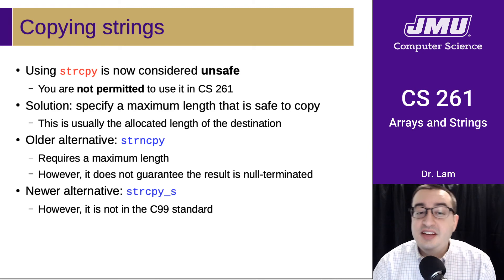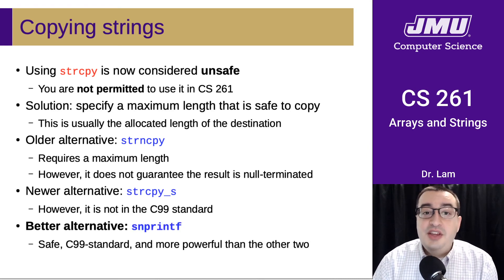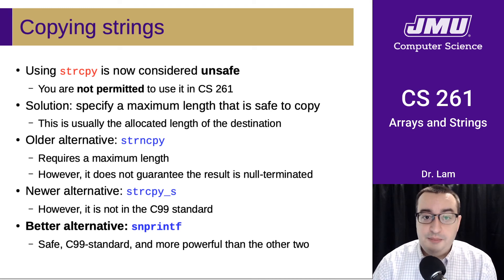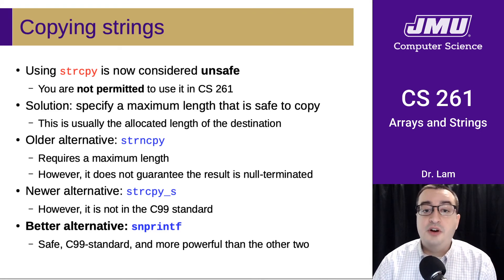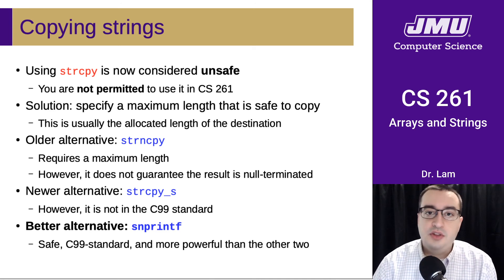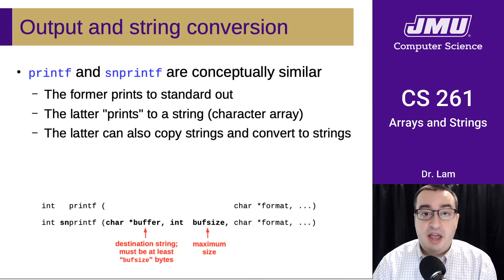There is also a newer alternative called strncpys, which is considered safer and is null-terminated. However, it's not in the C99 standard, which is what we're using in this course. So the better alternative that we're going to use in this course for string copying is snprintf. This function is safe, it is C99 standard, and it is far more powerful than any of the other options. You can actually use it for both generic string copying and string formatting.